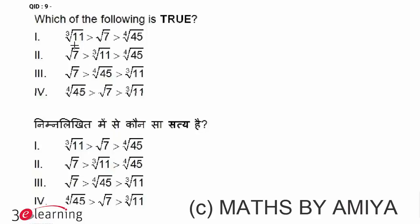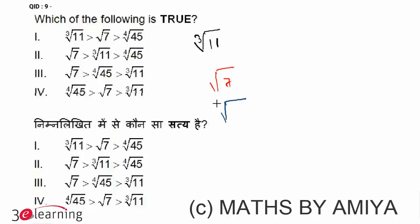Let's check the question. We have to arrange the third root of 11, square root of 7, and fourth root of 45 in descending order. So we have three values: the first value is the cube root of 11, next is the square root of 7, and the third is the fourth root of 45.